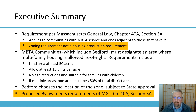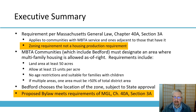MBTA communities, which include Bedford, must specify an area in town where multifamily housing is allowed by right. The requirements for Bedford include that we must select a land area which comprises at least 50 acres, and the average over that 50 acres, the district must allow at least 15 units per acre. Again, this is to allow housing to be built at that density — it's not a production requirement. For comparison, the mixed-use development at 54 Loomis Street is about 19 units per acre, and the developments over on Middlesex Turnpike — Taylor Ponds, for instance — are about 17 units per acre, so that's to ground you in what 15 units per acre looks like.